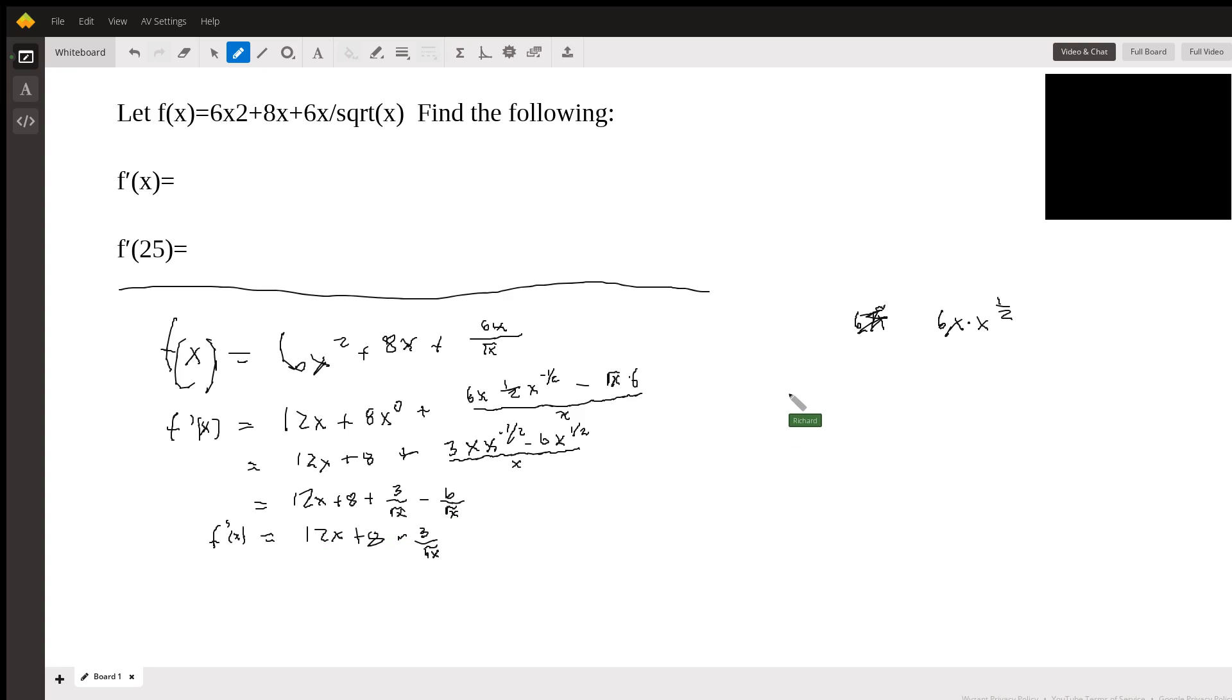And now you just want f prime of 25. And for that, you're just going to plug that in. So 12 times 25 plus 8 minus 3 over 5. Isn't that nice?